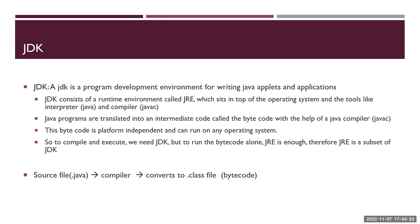How to use Java? Suppose you're given a Java program — it's a .java file — and you need to run it. To run a Java application, the very first thing you need is a JDK, the Java Development Kit. JDK consists of a runtime environment called the JRE — the Java Runtime Environment — which sits on top of your operating system.